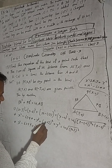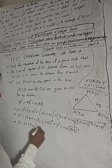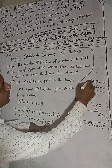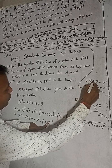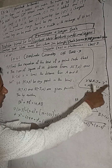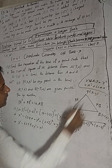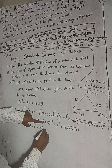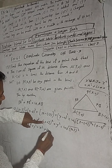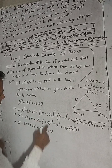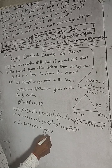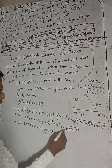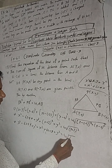Now expanding PB²: (x+3)² + y² = x² + 2·x·3 + 9 + y² = x² + 6x + 9 + y². So adding PA² + PB² gives: (x² - 6x + 9 + y²) + (x² + 6x + 9 + y²) = 24.